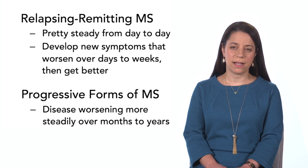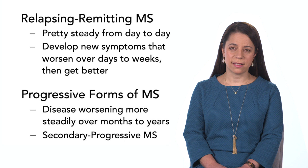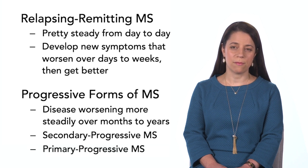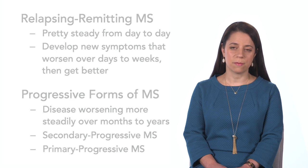There are people with relapsing-remitting MS who don't have any worsening in between relapses. There are people with secondary progressive MS who started out with relapsing-remitting but then moved on to develop gradual worsening over time. There are also patients with primary progressive MS — those people do not have any relapses, and what happens is just a slow worsening over time that comes on slowly.